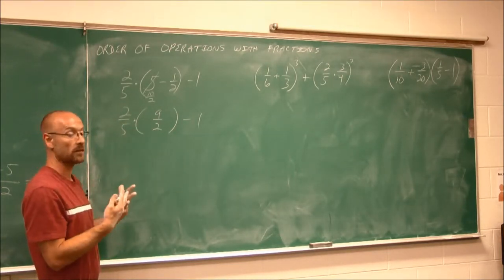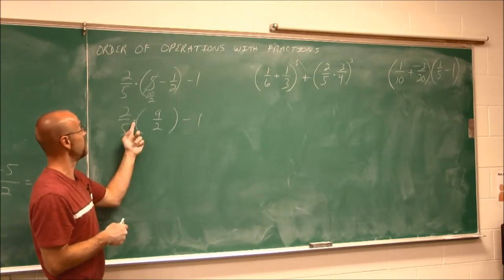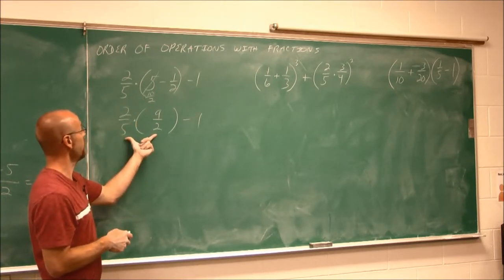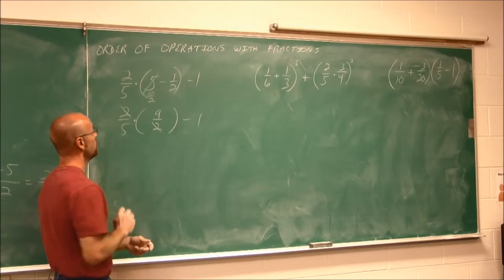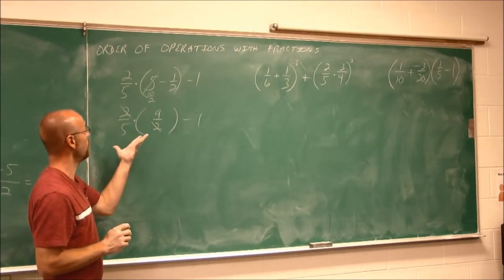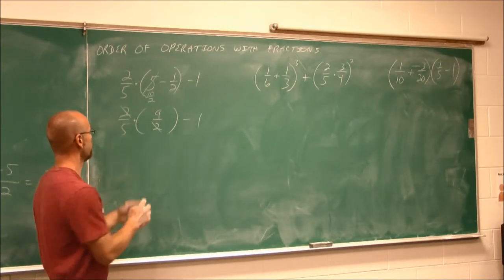Now I can move on to the next operation. In this case, it would be multiplication. So I can multiply these, and these two can reduce. 2 over 2 is 1. So I'm left with 9 fifths.